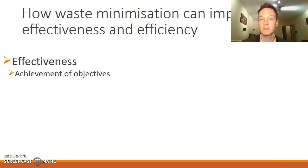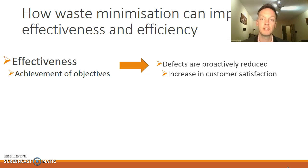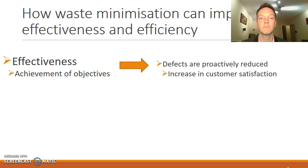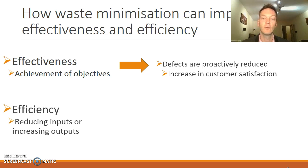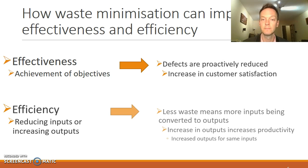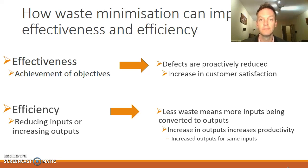Starting with effectiveness, which is about the achievement of business objectives — within lean management, defects are proactively reduced. Lean management is not just about the seven types of waste; it's also about a commitment to quality. So if you are proactively reducing your defects, you're going to have much more satisfied customers because the end product will be of good quality. For efficiency, which is about reducing inputs or increasing outputs, less waste means more inputs being converted into outputs. If you've got 100 units of inputs and you don't have much waste throughout the process, most of those inputs are going to be converted into outputs, therefore maximising your outputs. An increase in outputs increases your productivity.